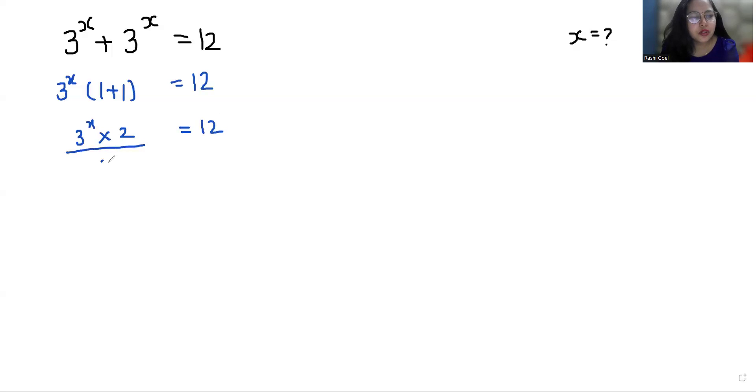Now I'm going to divide by 2 on both sides, so 3^x equals 6. So if I take log on both sides, x log 3 equals log 6.